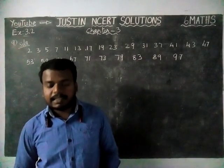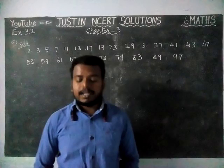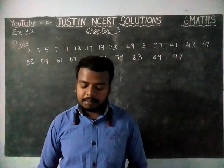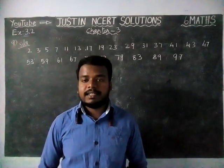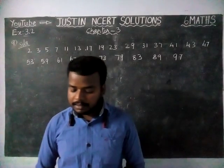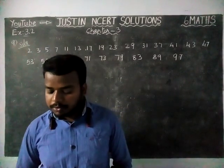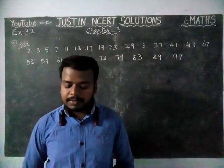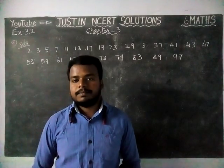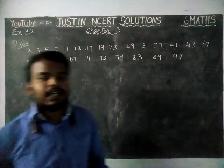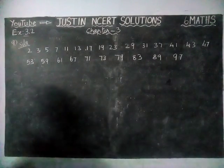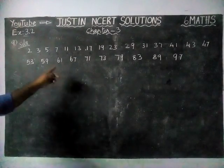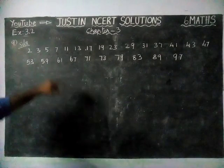And here the question is: write 7 consecutive composite numbers less than 100 so that there is no prime number between them. We have to write continuous composite numbers, and in between there should not be any prime number.